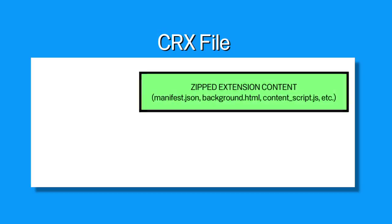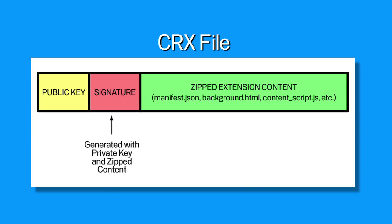Now I'll explore how the packaging and signature process works. Google Chrome extensions are packaged into CRX files. If you're using the gallery, we generate the CRX file for you when you hit the publish button. If you want to host your extension on your own site, you'll create the CRX file with the Pack Extension button on the Extensions Management page in Google Chrome. A CRX file is really just a zip file of your extension directory, plus two more things: the public key and a signature of the zip contents made using the private key.